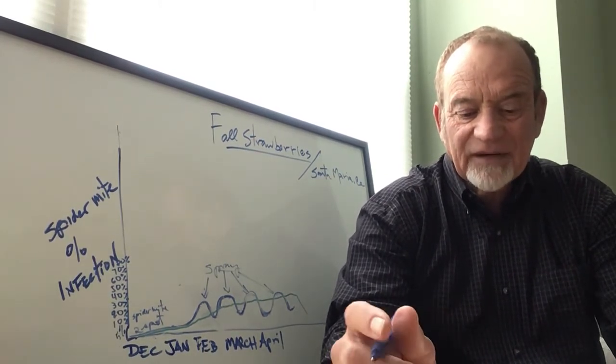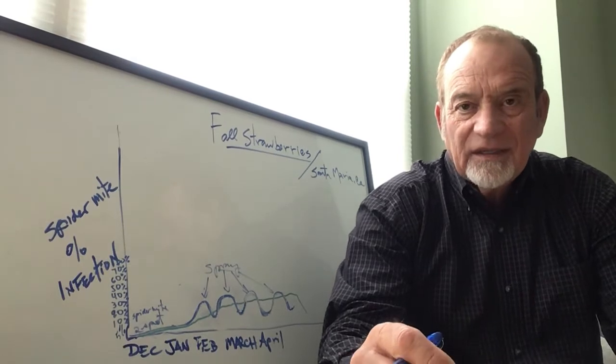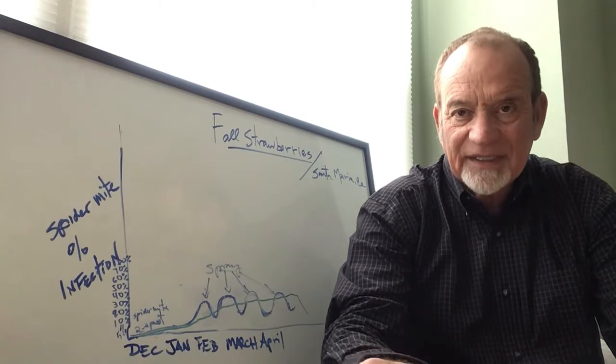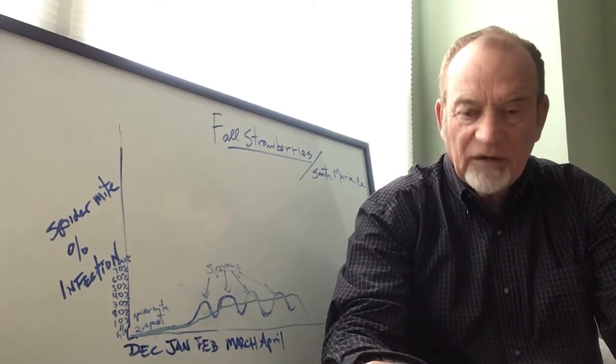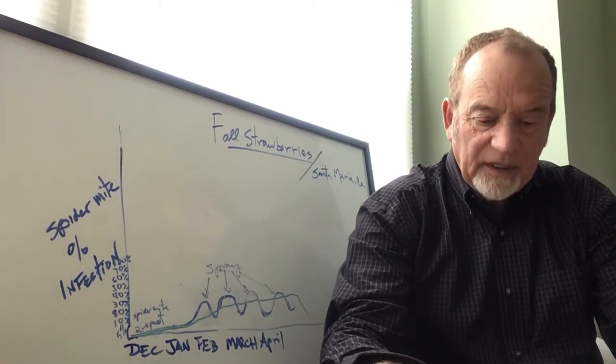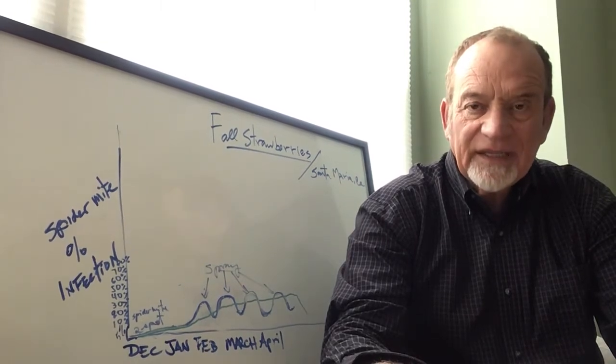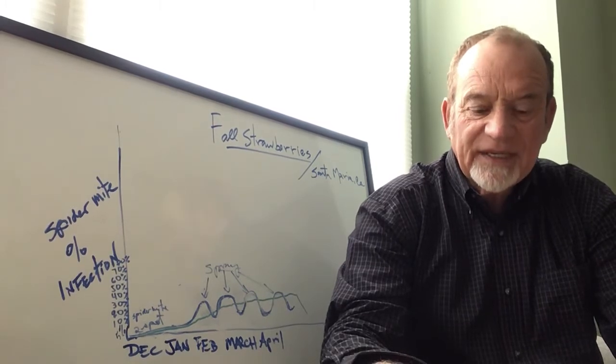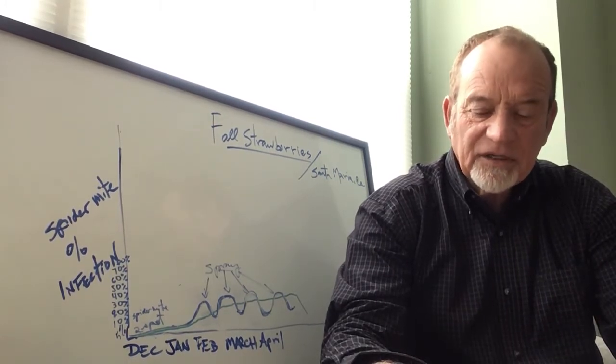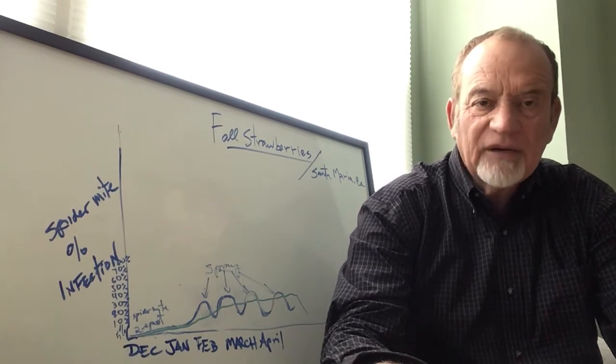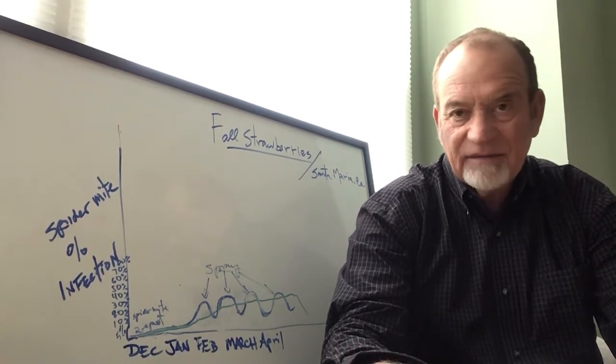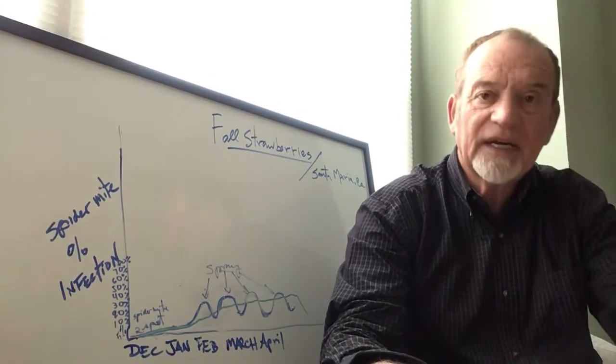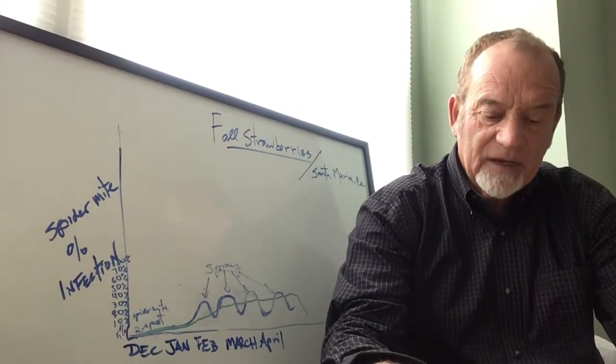Aggressive monitoring is required in order to time the first release of the predatory mites. We need to start releasing at 1%, no more than 10% infection of two spider mites. Normally I would start in the middle of December with my releases.